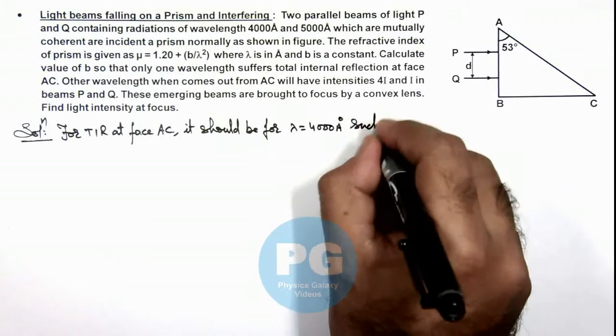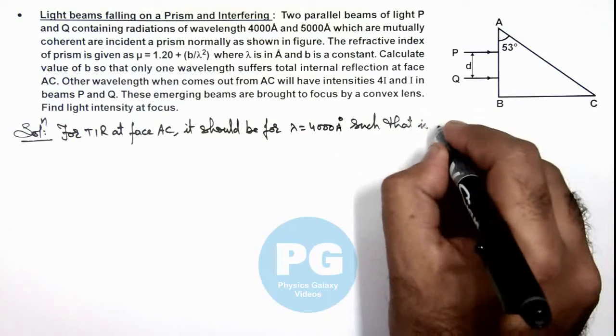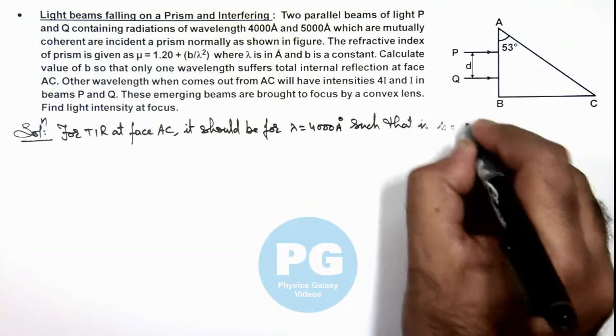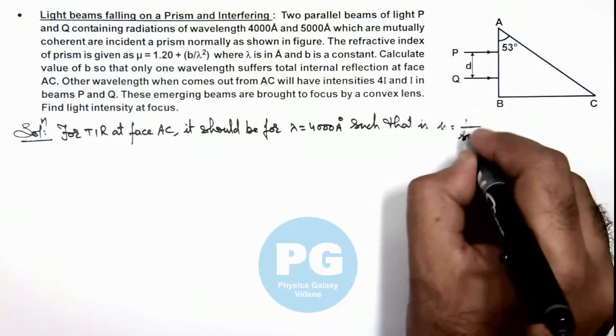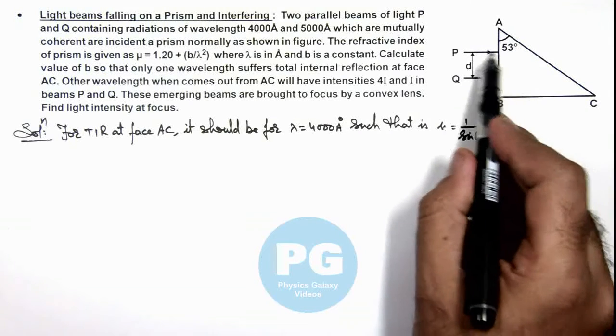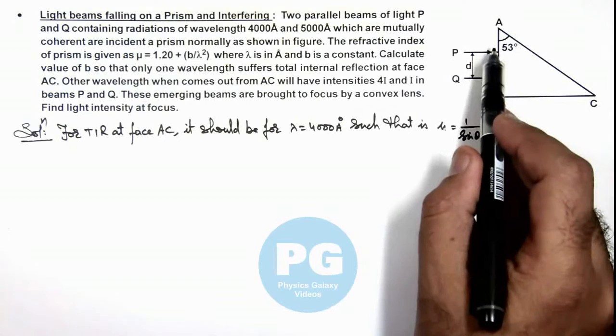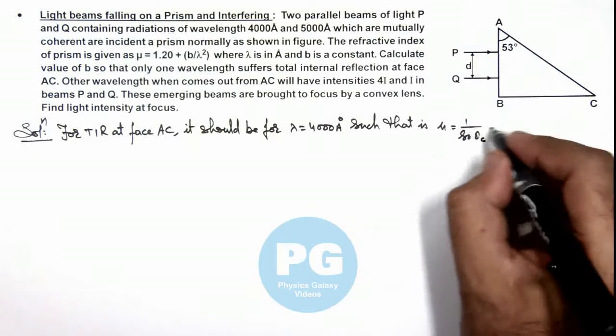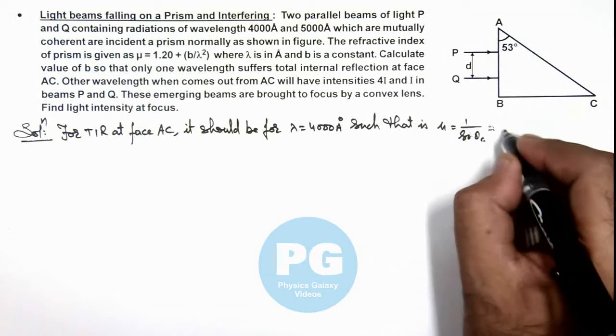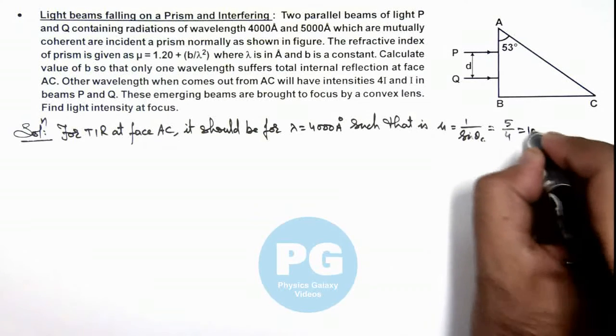Such that its refractive index should be taken as 1 upon sin θ_critical. And the angle at which the light is incident on face AC will be 53 degrees. So 1 by sin 53° is 4 by 5 reciprocal, this is 5 by 4 and it should be 1.25.